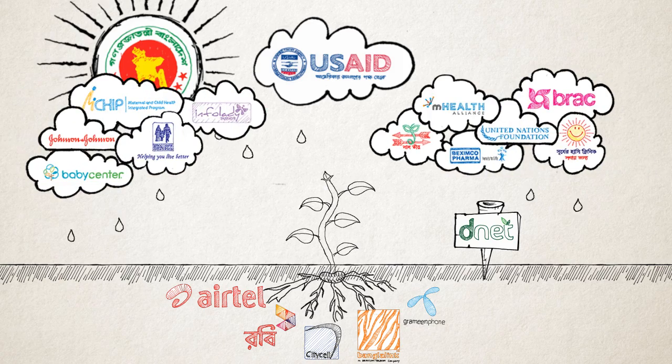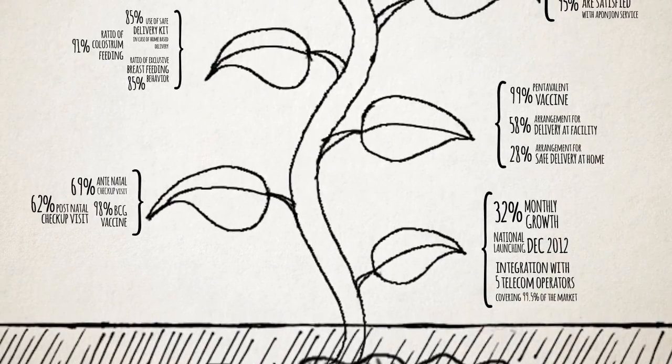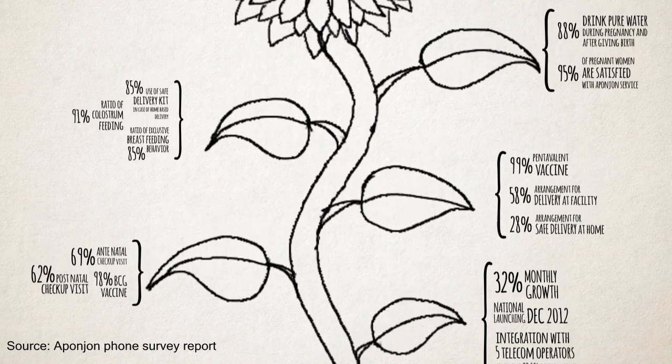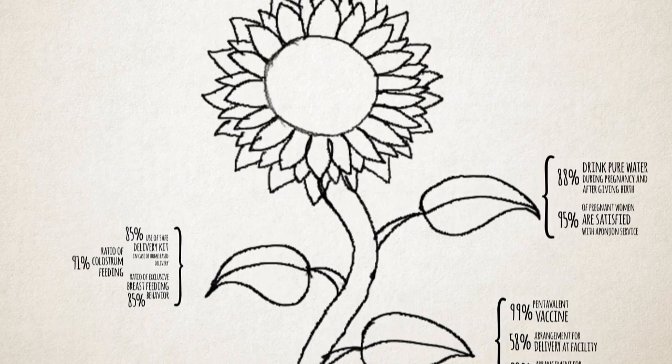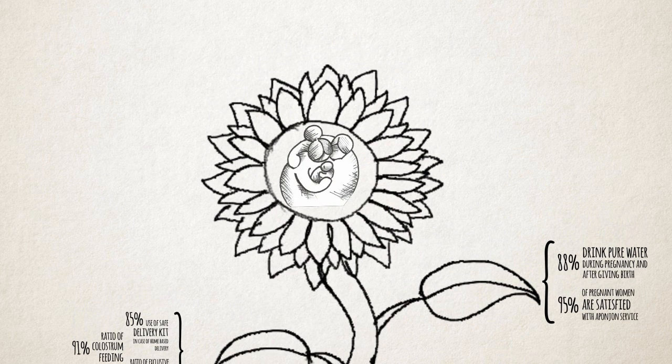In no time, Apunjon grew bigger and bigger through a series of milestones and achievements. Apunjon started to reach every corner of the country, spreading critical health information to expecting and new mothers.